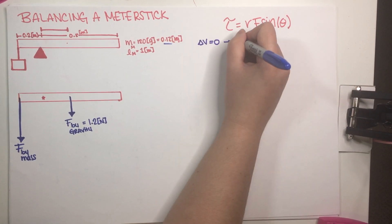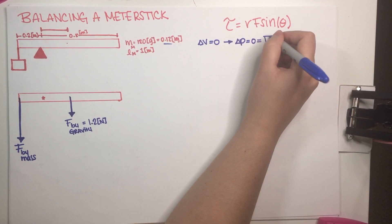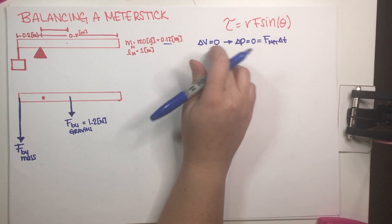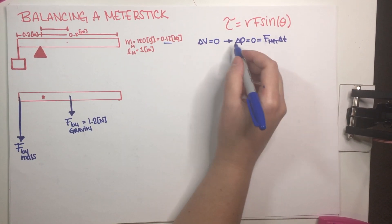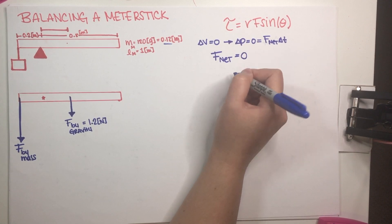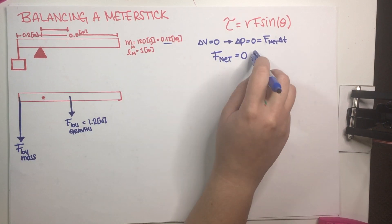And because delta P is equal to F net delta T, if the meter stick is not moving in space, that basically means that the net force is equal to zero, which means that if you add all of your forces, they have to add up to zero.